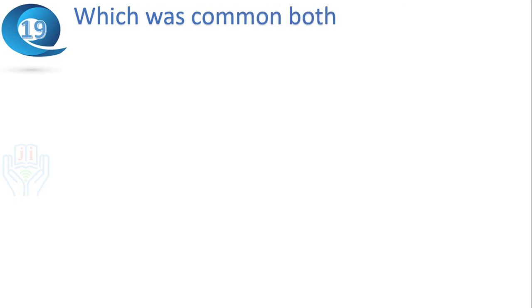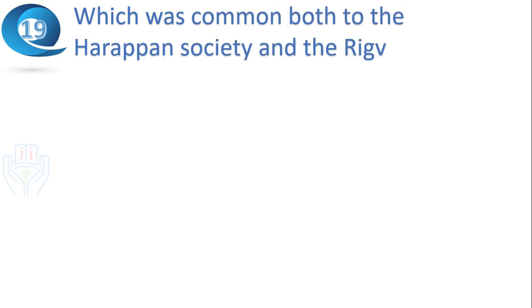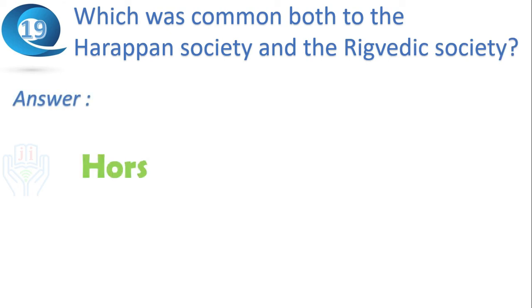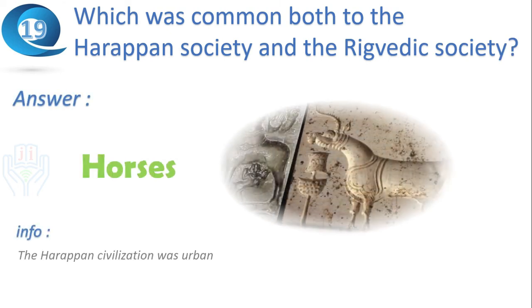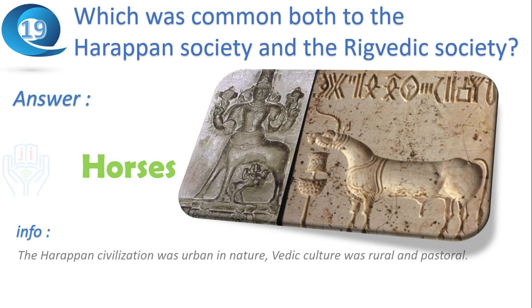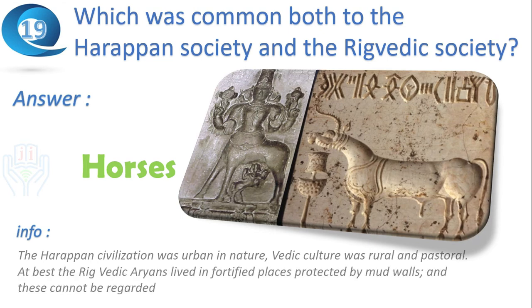Next question: which was common both to the Harappan society and the Rigvedic society? Answer: horses. The Harappan civilization was urban in nature, while Vedic culture was rural and pastoral. At best, the Rigvedic Aryans lived in settlements protected by mud walls, which cannot be regarded as towns in the Harappan sense.